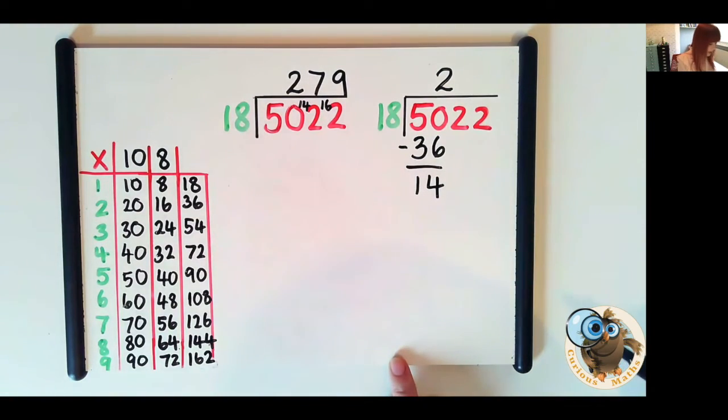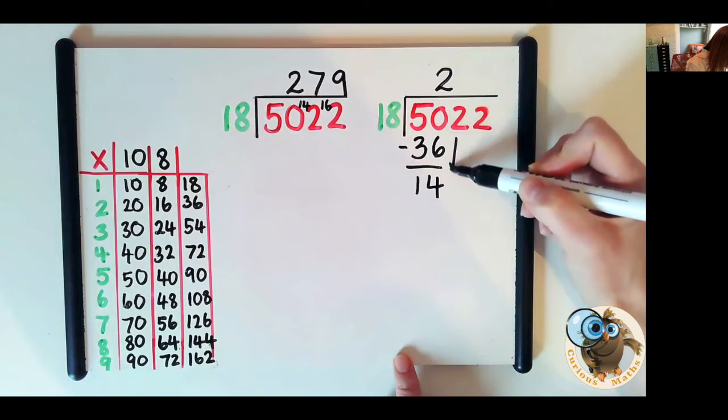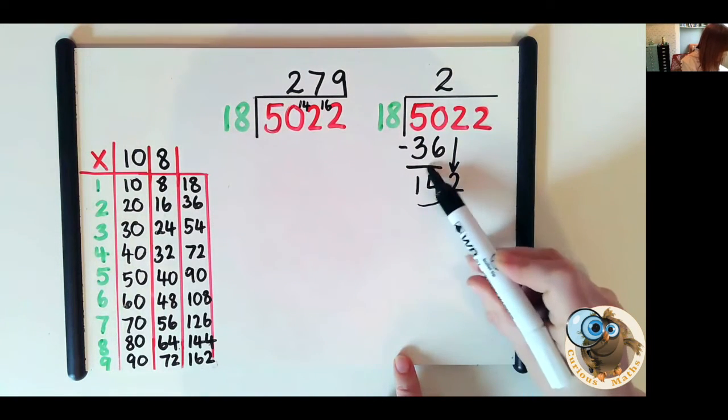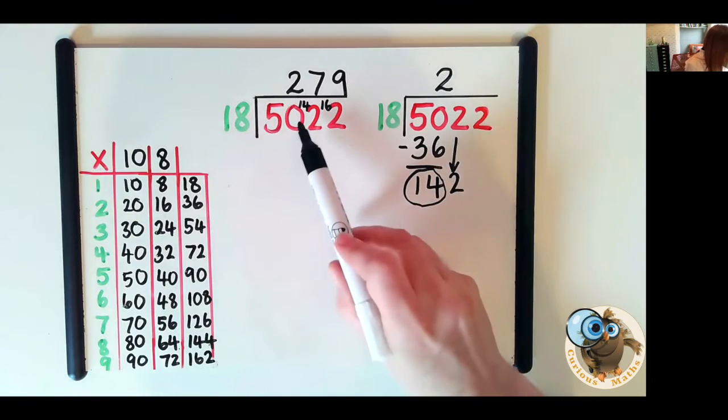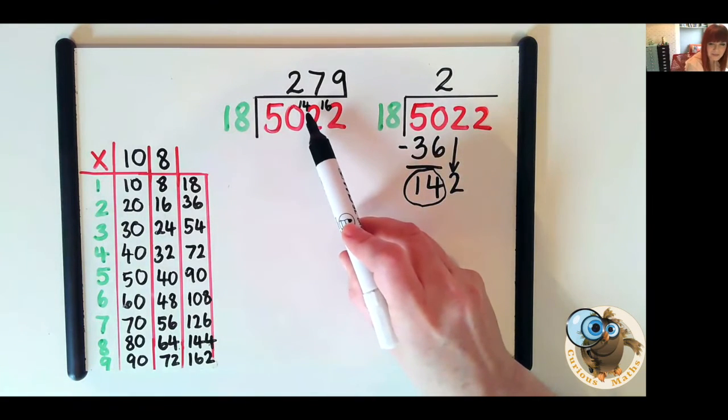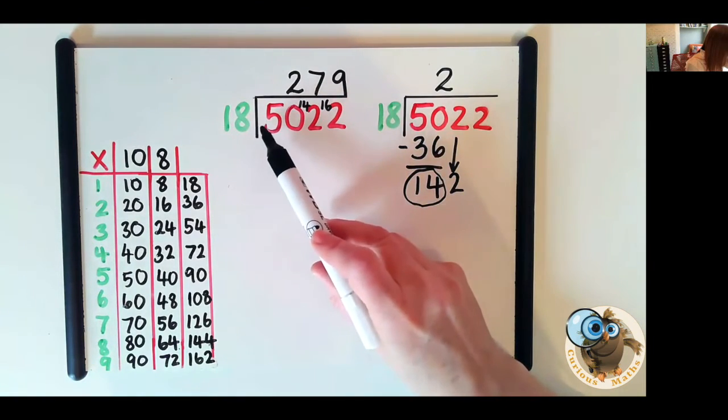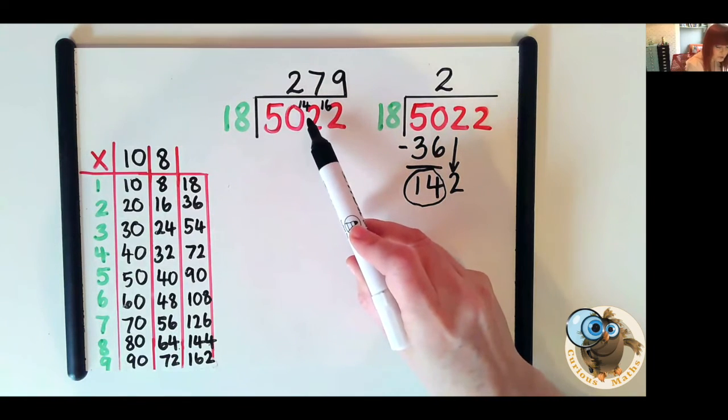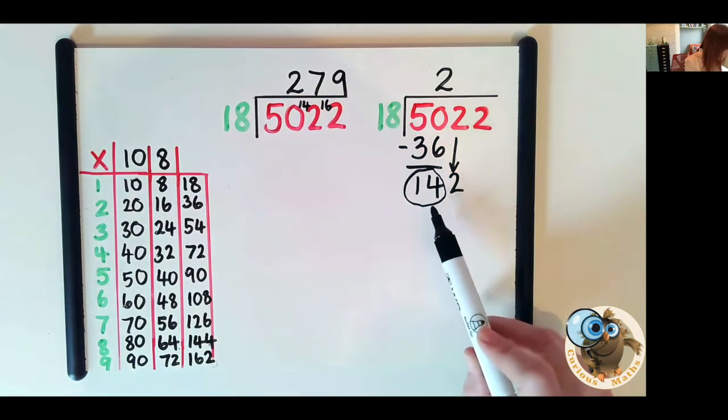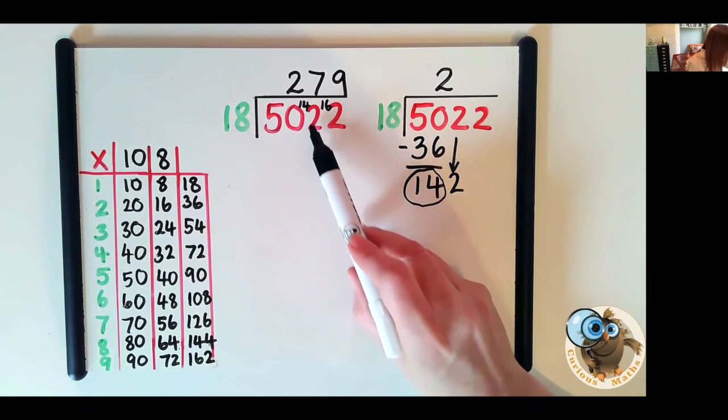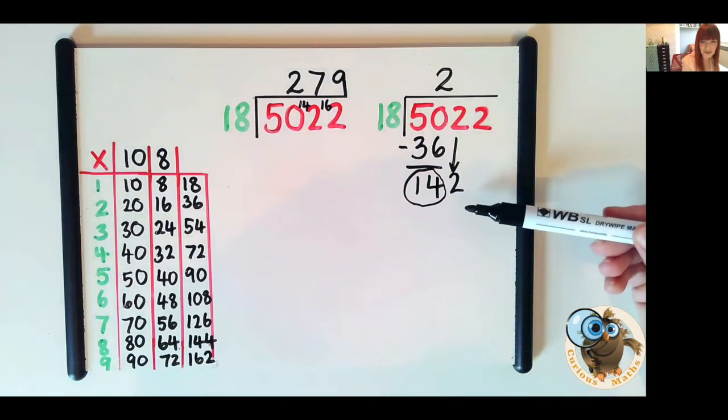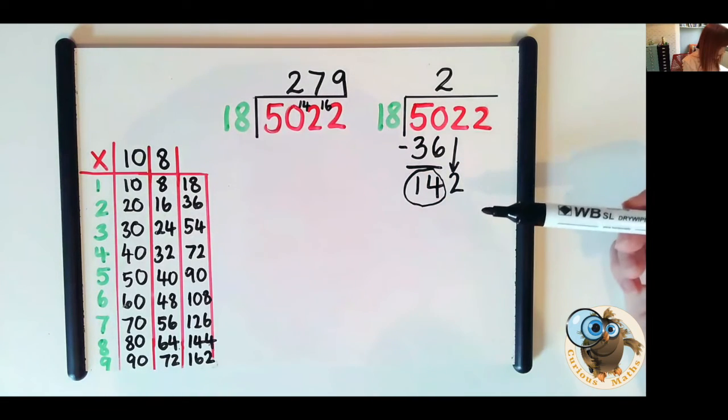Next we need to bring the next digit down and if we see here this 14 is actually the regrouped amount here. So we did how many 18s in 50? Two with 14 remaining. Here's our 14 remaining, it's the same amount it's just written underneath rather than in front and look we've got 142 here so look that's why we bring our two down.